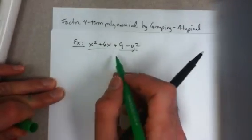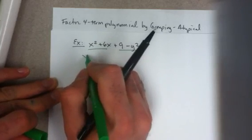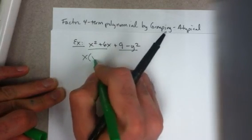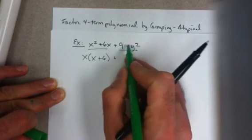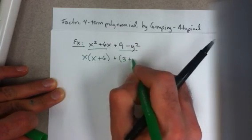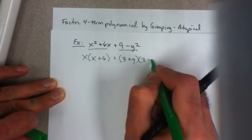So we're going to run into a problem when we try this. You can factor each group. I can take an x out of this first group, leaving us with x plus 6. And if you recognize that this is a difference of two squares, you could factor it as 3 plus y times 3 minus y.